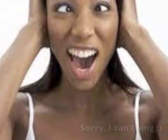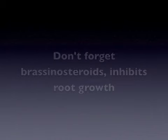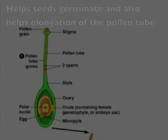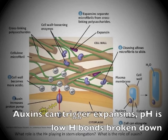Don't forget brassinosteroids — inhibits root growth, helps seeds germinate, also helps elongation of the pollen too. Abscisic acid inhibits growth, promotes dormancy, tells the seeds to go dormant, and then promotes leaf and stomata closure.